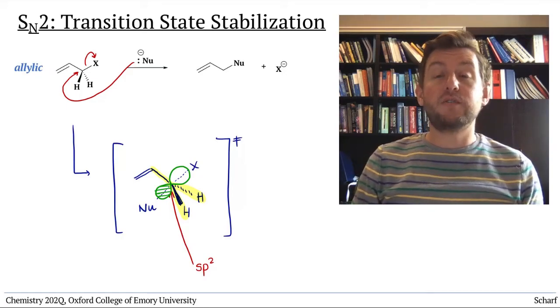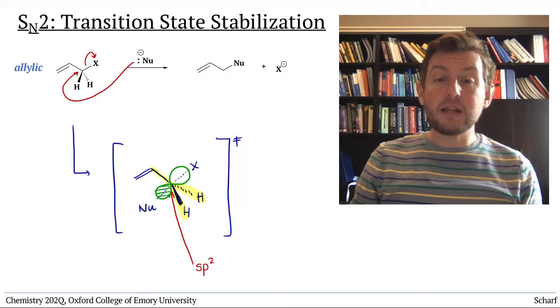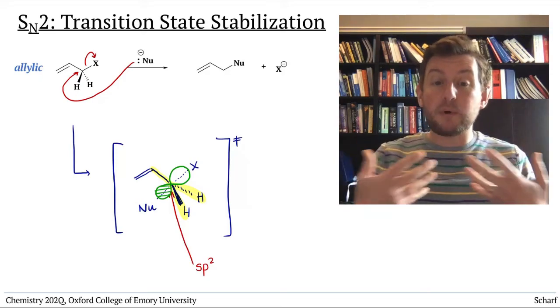We know from our discussion of carbocations that p orbitals can be stabilized by adjacent orbitals that overlap with them.